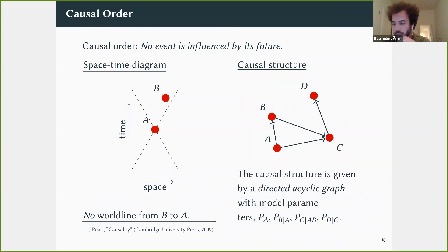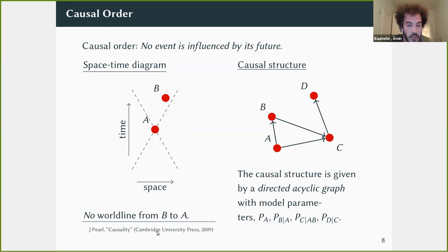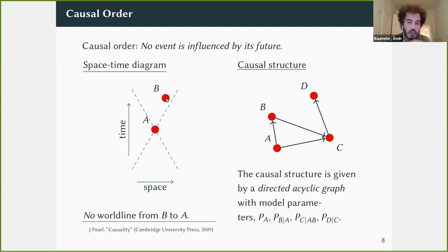What is causal order? In the physics literature, causal order means no event is influenced by its future. In a spacetime diagram — time going bottom to top, space on the horizontal axis — we have two events A and B, and the dashed lines represent the light cones. A signal from A can reach any point within A's future light cone. Causal order means A is not influenced by B: there is no worldline from B to A where the particle never exceeds the speed of light.